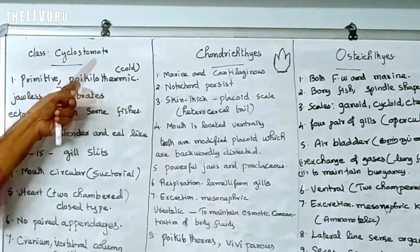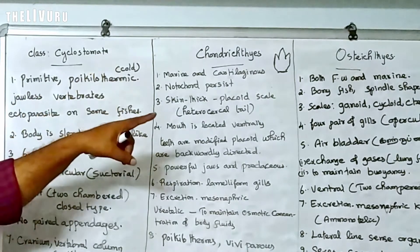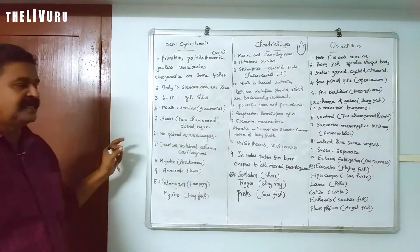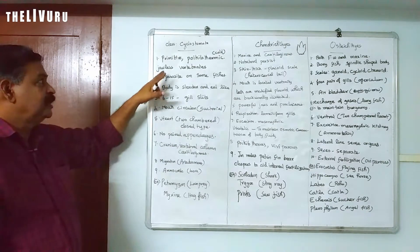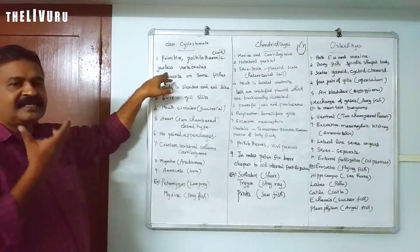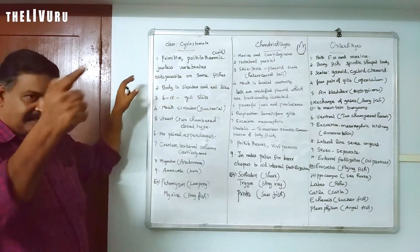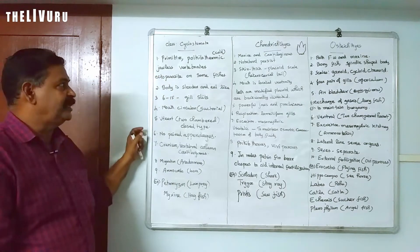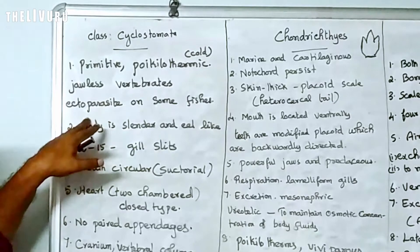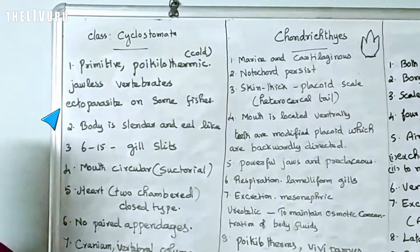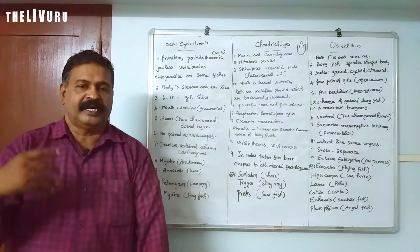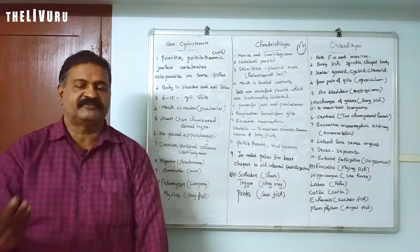In Cyclostomata, all are poikilotherms — cold-blooded animals. They are ectoparasites. Ectoparasites are parasites — animals which depend upon other animals for food and shelter. There are no jaws in Cyclostomata; that is why the mouth is circular.